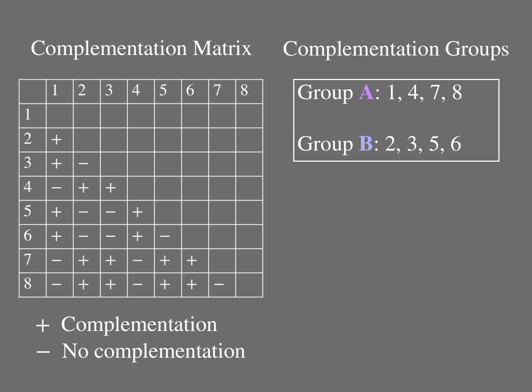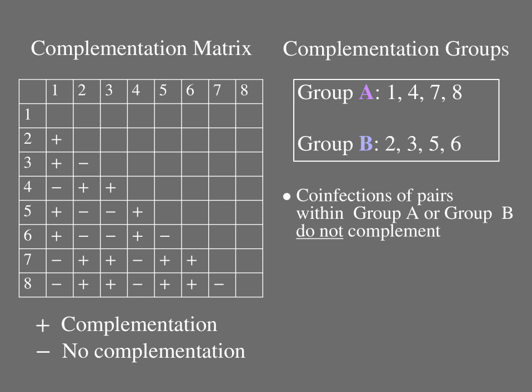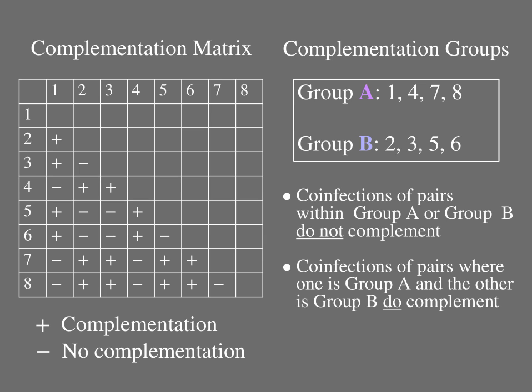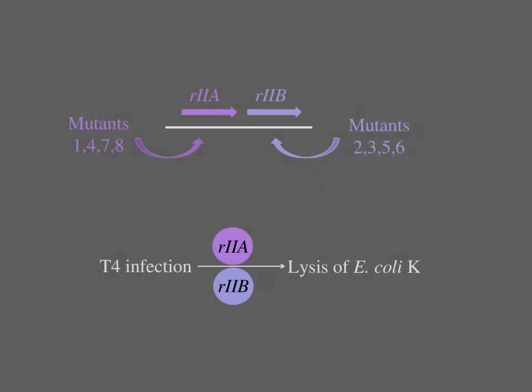Benzer's R2 mutant collection contained two complementation groups, which he called A and B. No complementation happens in co-infection of E. coli K with any pair of R2 mutant strains within group A or within group B, but complementation is observed in pairwise co-infections of any group A mutant with any group B mutant. The complementation data indicates that Benzer's collection of R2 mutant strains includes strains with mutations in either one of two different genes, R2A or R2B. Each complementation group corresponds to a different gene, and the strains within each group have different mutant alleles of either R2A or R2B.